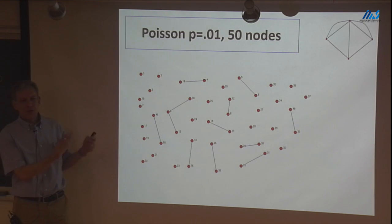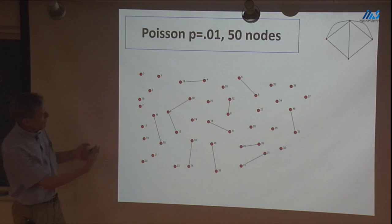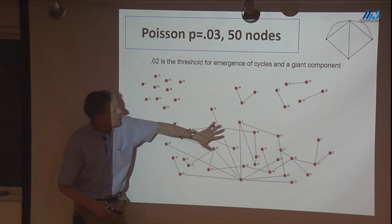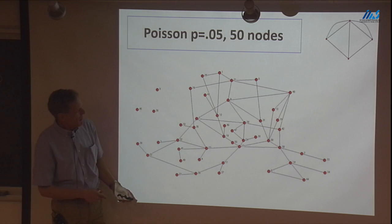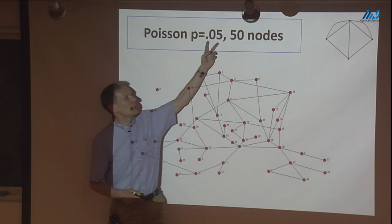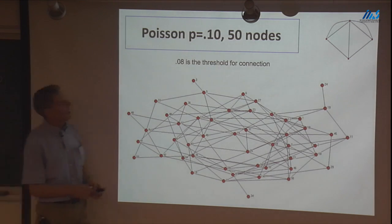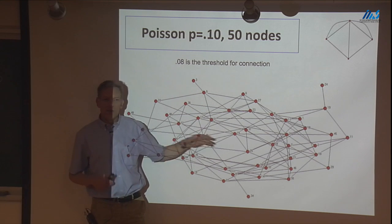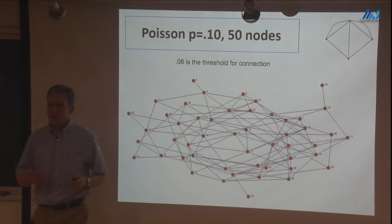In terms of Poisson random graphs, if we take 50 nodes and set p = 0.01 we get just a few links. At p = 0.03 a giant component starts to form with some cycles but still isolated nodes. At p = 0.05, with average degree about 2.5, the network looks like one large component with a few isolates. By p = 0.1 the network is connected with very high probability, and you can get bounds on how quickly that probability approaches 1.